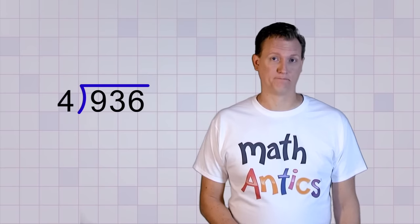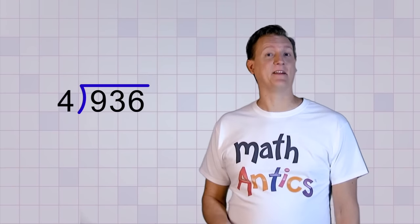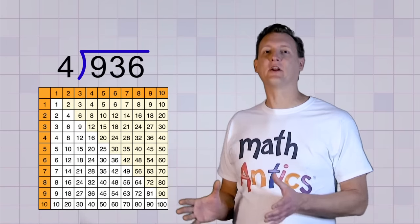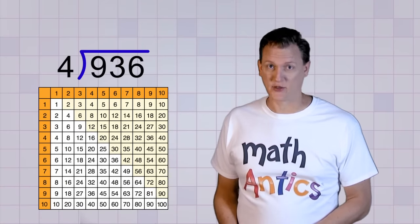When we learned basic one-step division, all of the dividends were small enough that we could just use the multiplication table to help us find the answer. But what if we have a division problem like this? 936 divided by 4. 936 is definitely not on our multiplication table. In fact, there's not anything even close to 936. So what do we do?